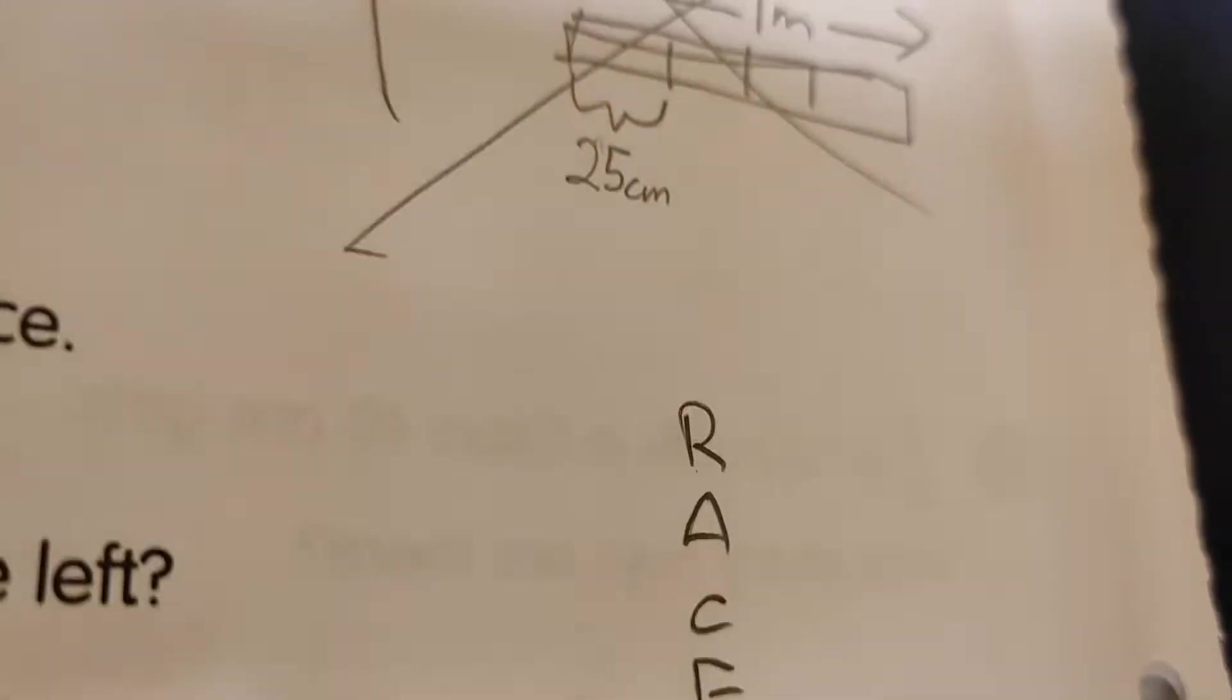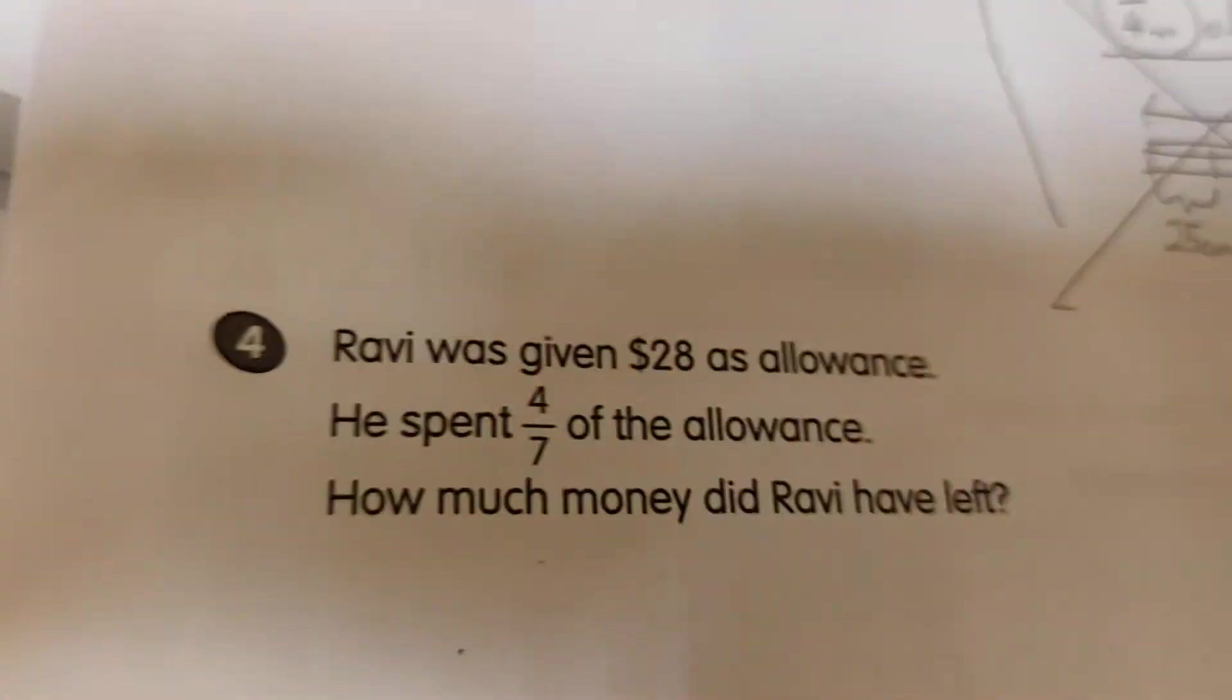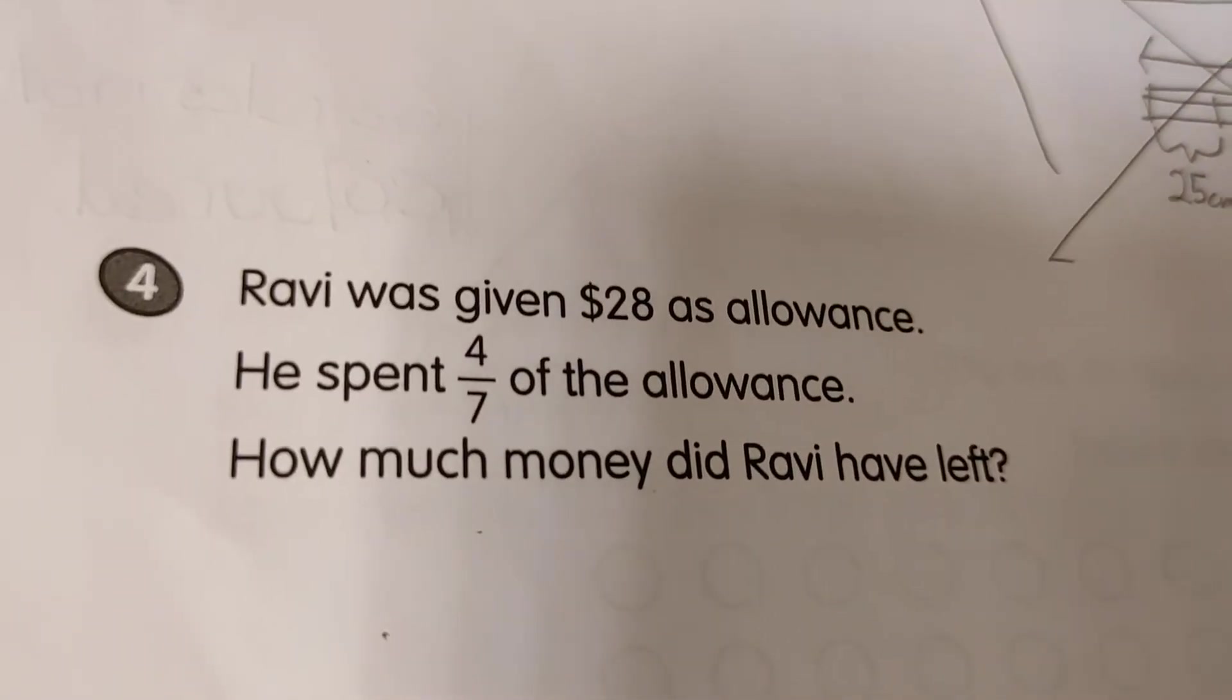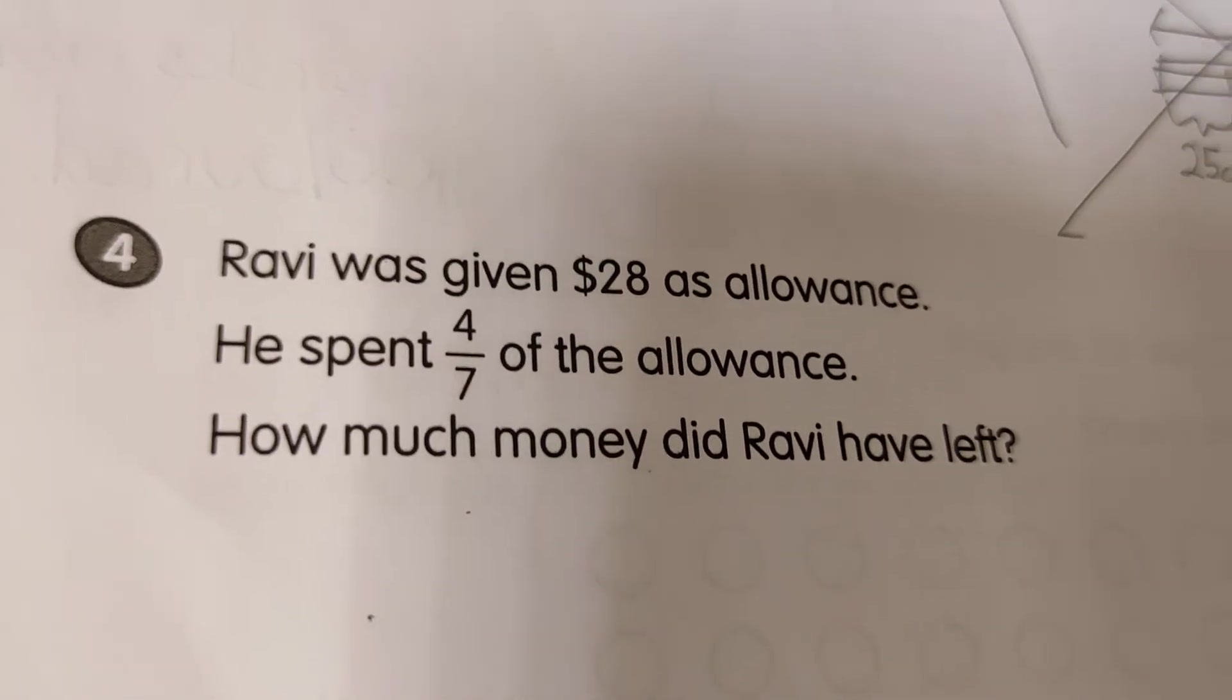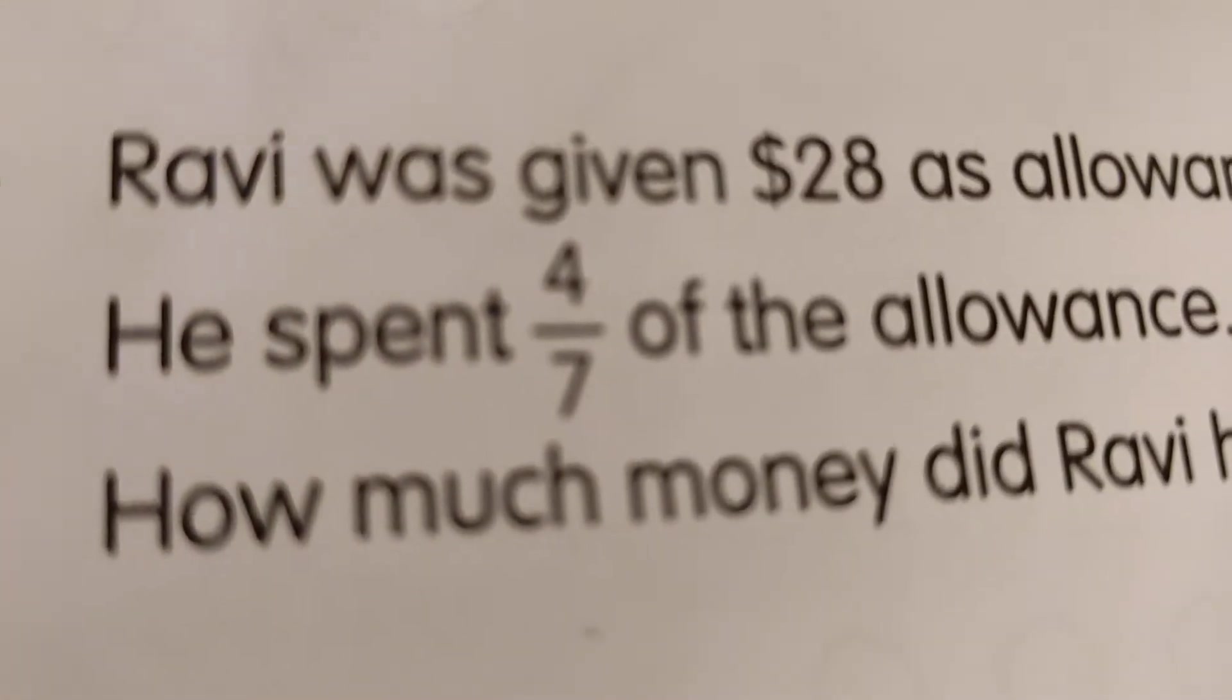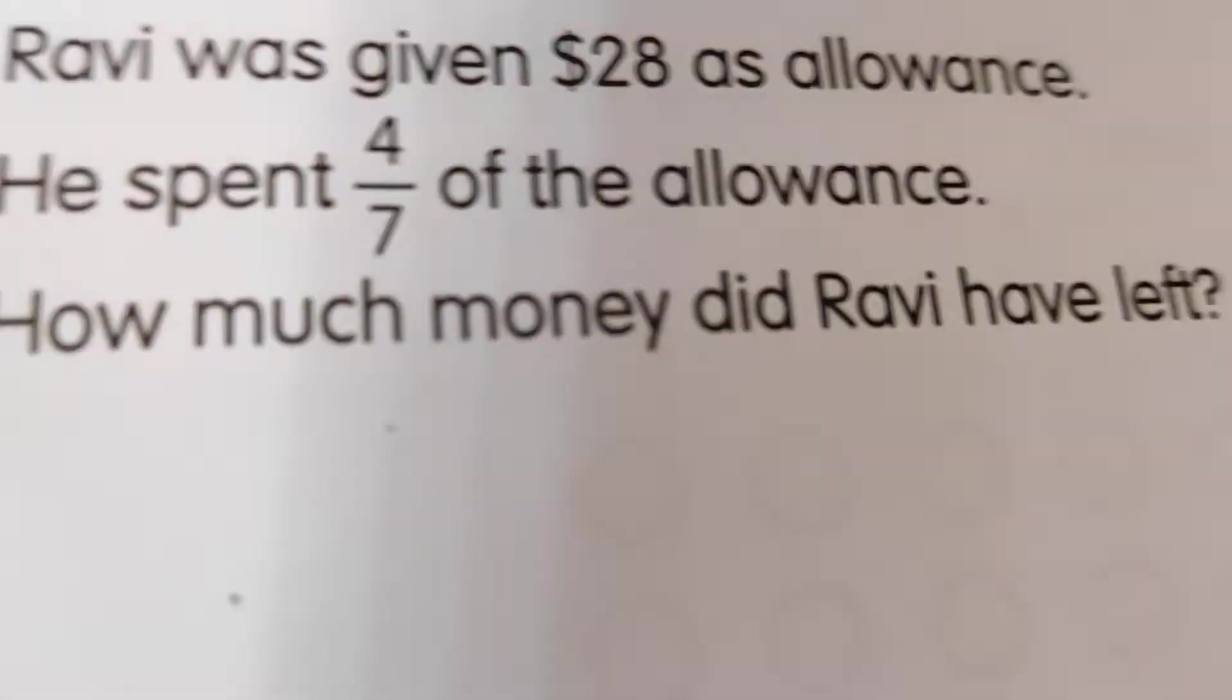Okay, today we are going to use the RACE method. R stands for Read. Let's read it. Ravi was given $28 as allowance. He spent 4 out of 7 of the allowance. How much money did he have left? Okay, see this number fraction. It can also be 4 sevenths also.